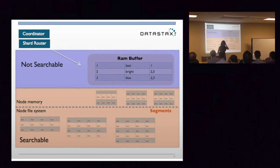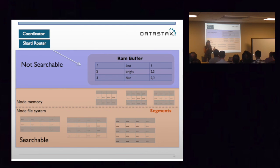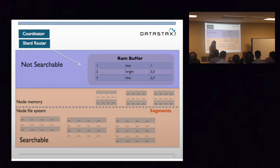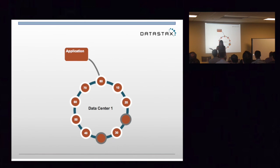In general with Solr, the RAM buffer is not searchable, but everything in node memory and in the segments is searchable. So once the data leaves the RAM buffer and goes into segments in memory or on disk, it becomes searchable. The trade-off is: as you're ingesting data, this is very, very fast to ingest. You need to manage how fast data is ingested into Solr because you want it to be searchable, so you need to control how quickly data becomes searchable. Solr also gets scalability from Cassandra — just like Cassandra scales linearly, the same goes with Solr.